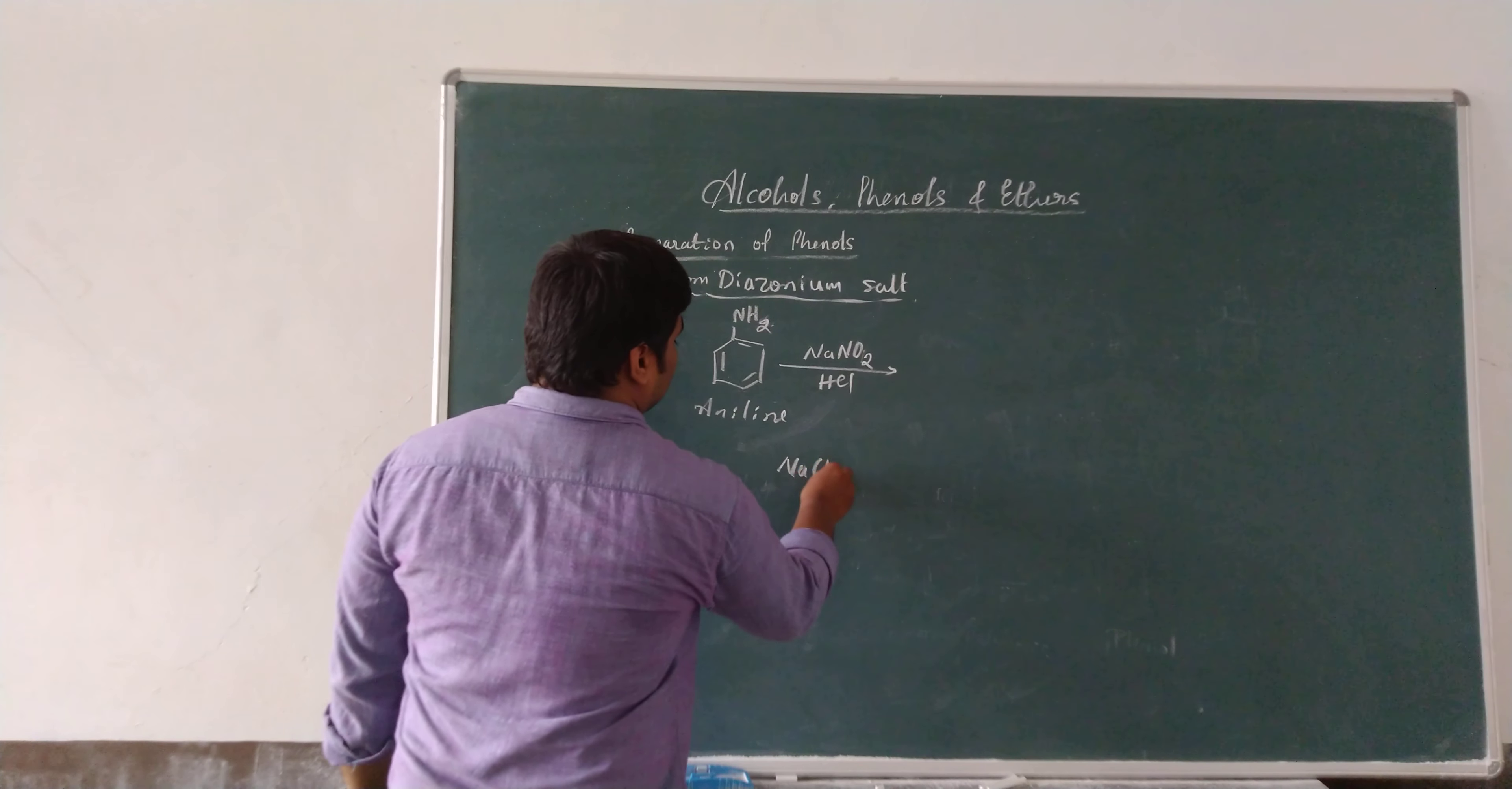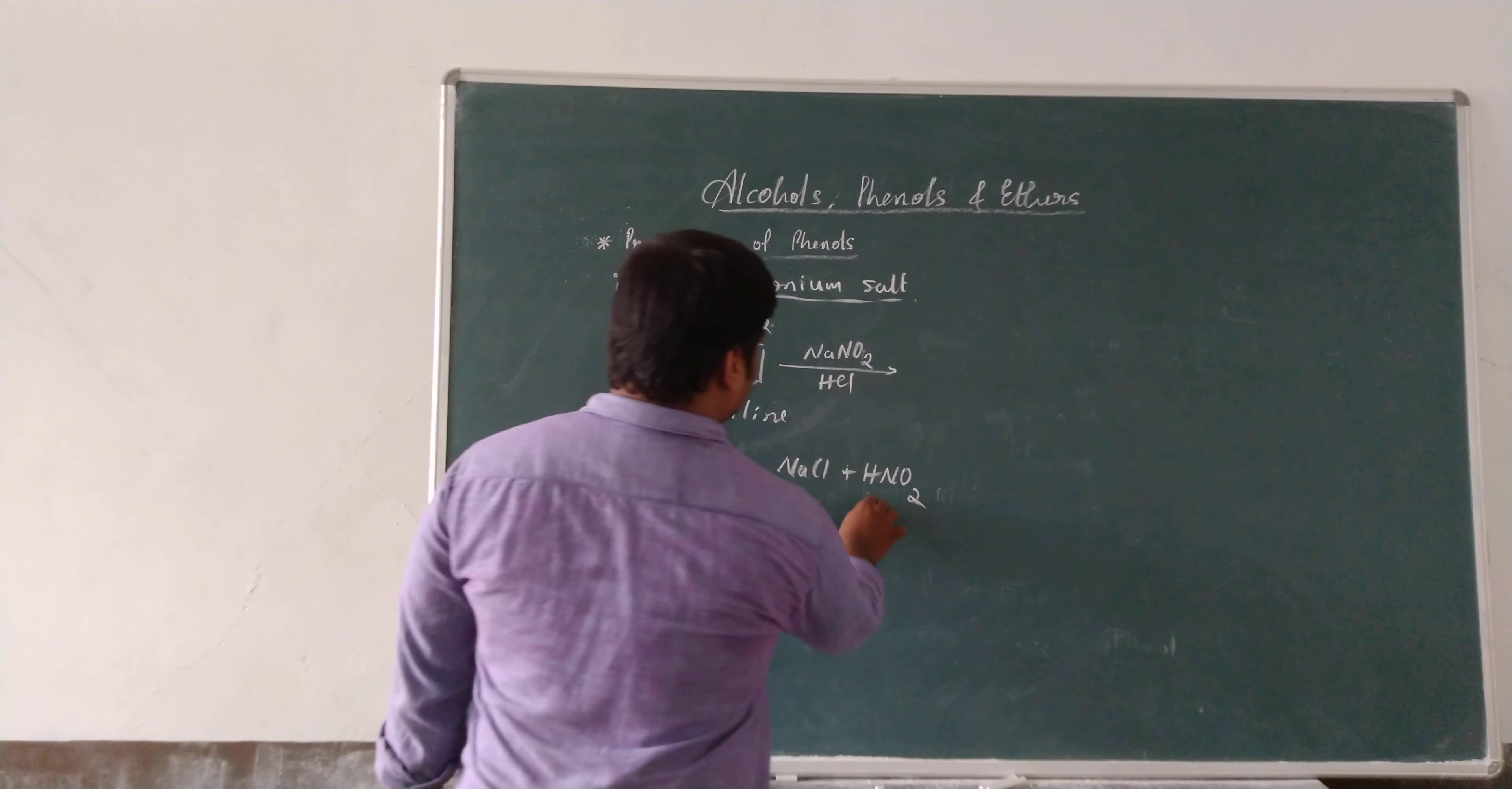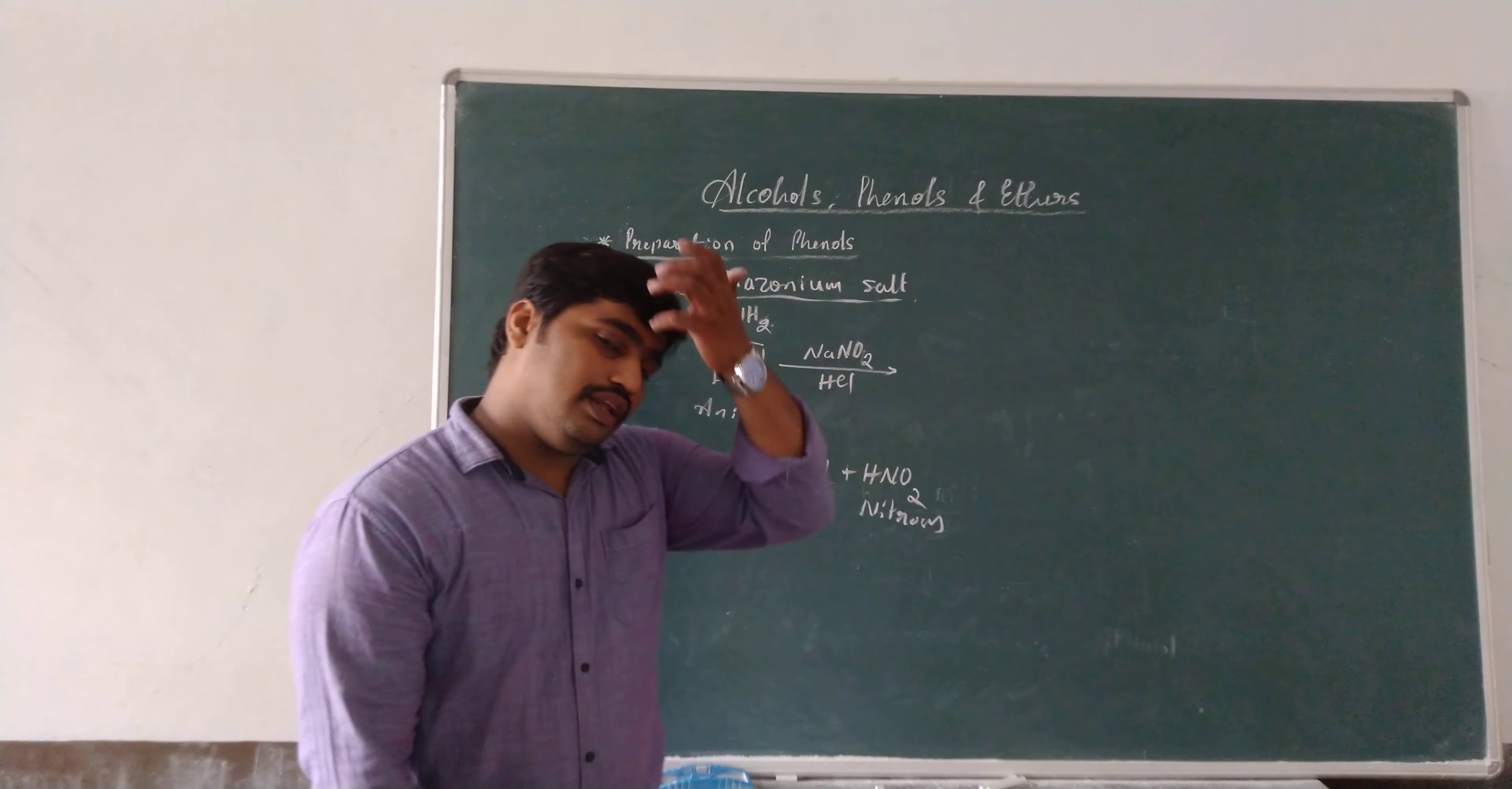This mixture, sodium nitrite and HCl mixture, is nothing but mineral acid. How? This mixture gives NaCl and HNO2. NaCl, HNO2, nitrous acid. This nitrous acid in presence of sodium chloride, mineral, due to that this is known as mineral acid.